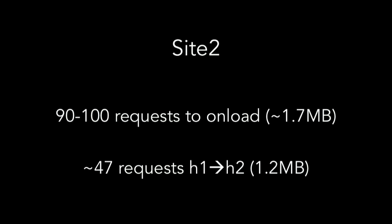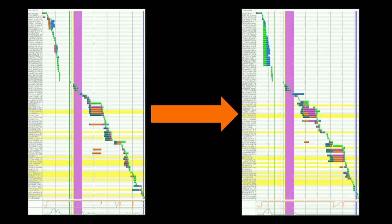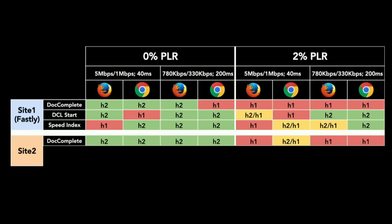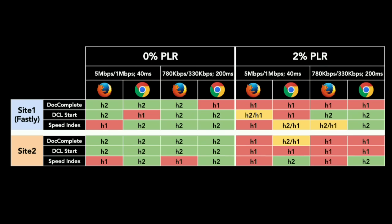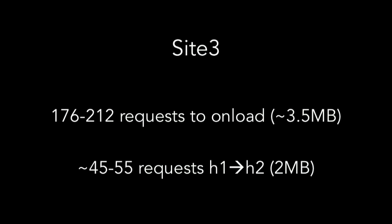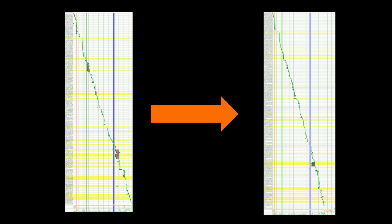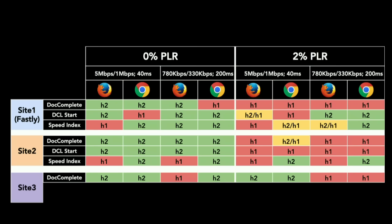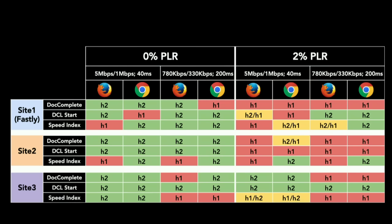Site two is a travel site with about 100 requests — half are moving from H1 to H2, but it's about 75% of the payload. H2 fares pretty well but H1 does better with packet loss. Same thing with DOM content loaded. Slightly different story with speed index. Site three had many more requests — it's a media site with lots of third-party content, only about 25% of assets move from H1 to H2, but that's more than half of the payload. You can barely tell which requests went from H1 to H2 because there's so much content on the page.